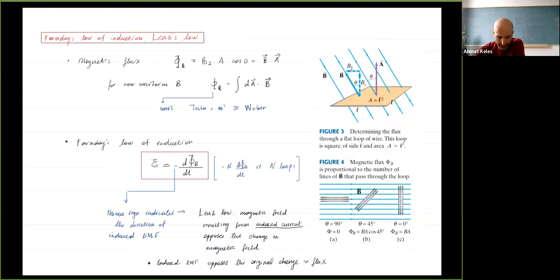Getting a bit more formal: we defined magnetic flux — nothing new there — and then we defined Faraday's law of induction. The induced EMF is equal to the rate of change of magnetic flux with a minus sign, and that minus sign indicates Lenz's law.